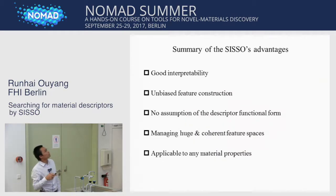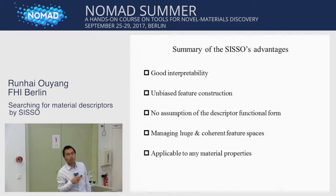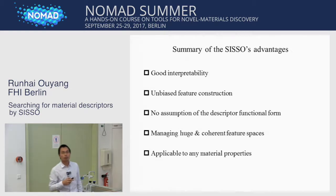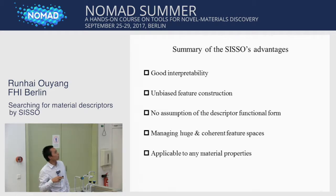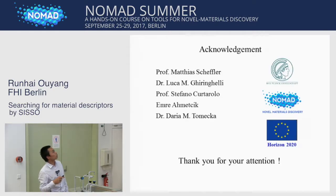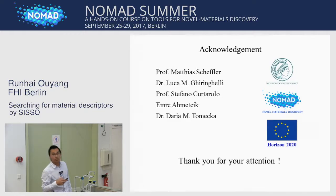Finally, here is a summary of CISO's advantages: first, good interpretability because very few coefficients are involved; second, unbiased feature construction — we construct all features within a certain complexity cutoff with no assumption about the functional form; third, it manages huge and coherent feature spaces; and fourth, it is applicable to any material properties, including both quantitative and classification problems. I want to thank Matthias Scheffler, Luca, Stefano, Emre, and Daria. Thank you for your attention.